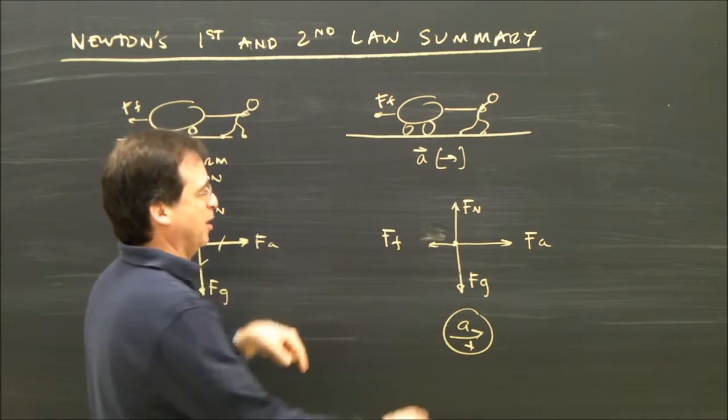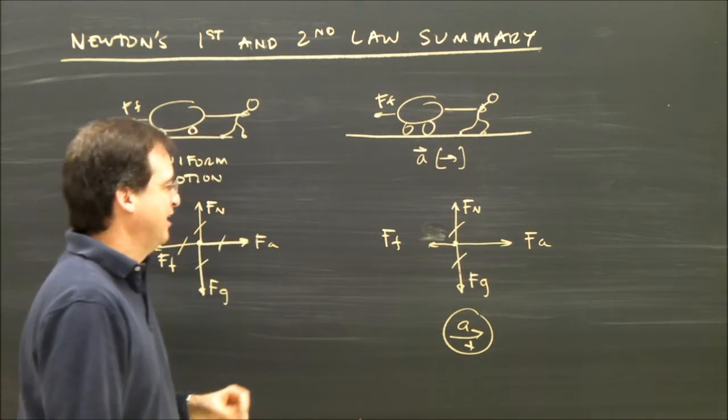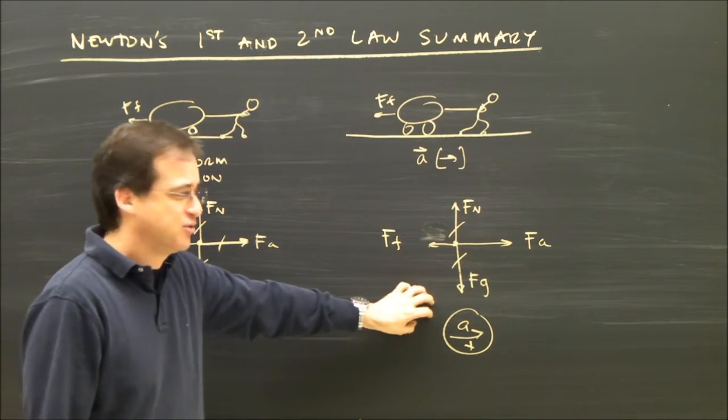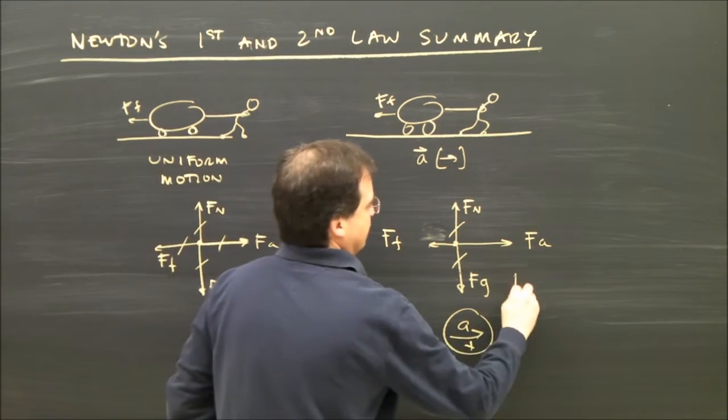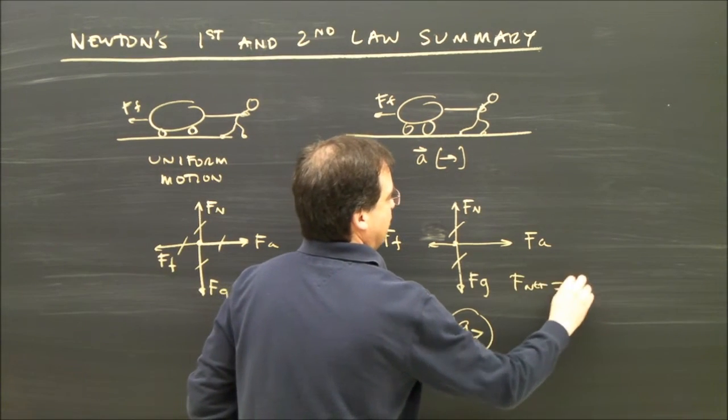It's not accelerating up or down, so these two must be equal. And now I need an equation so I can calculate the acceleration. And you say F net equals MA.